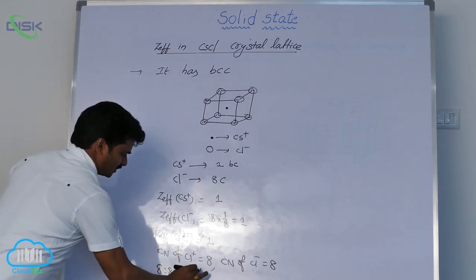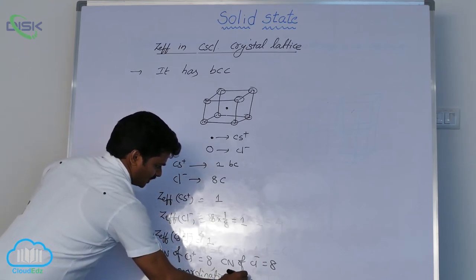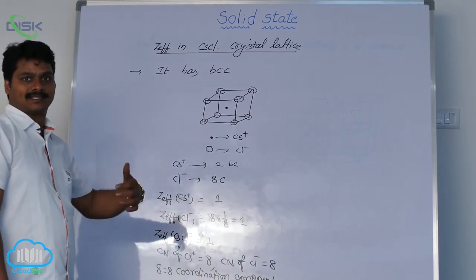Cesium chloride structure is 8:8 coordination compound.